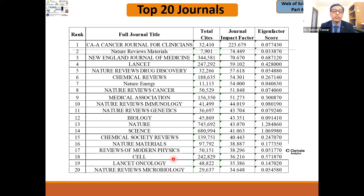These are the top 20 journals globally according to Clarivate Analytics. Number one is the CA: A Cancer Journal for Clinicians with an impact factor of 223.679 and 32,000 total citations. Then Nature Reviews Materials is ranked number two, followed by the New England Journal of Medicine, and the Lancet at number four — many of you have heard about the Lancet during the coronavirus pandemic, as vaccine data has been published there.